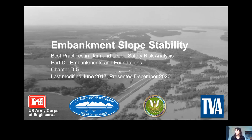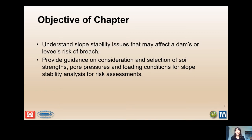This presentation will be discussing Embankment Slope Stability, Chapter D5 of Best Practices. Assessing the likelihood of slope instability which may or may not lead to a dam or levee breach requires consideration of the full plausible range of soil behavior and the relative likelihood of different types of behavior which may vary with time and rate of loading. The objectives of this chapter are to understand slope stability issues that may affect a dam or levee's risk of breach and provide guidance on consideration and selection of soil strengths, pore pressures, and loading conditions for slope stability analysis for risk assessments.